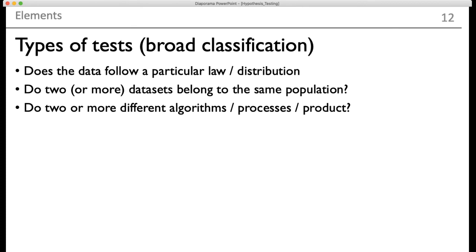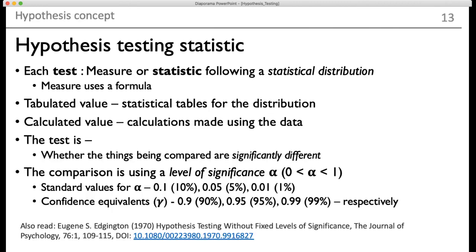Broadly, there are three kinds of hypothesis tests. First, whether the data follows a particular law or distribution. Second, whether two or more data sets belong to the same population — collected independently but actually representing the same thing. Third, comparing two or more different algorithms, products, or medicines. These are the three broadly classified tests we are going to talk about.